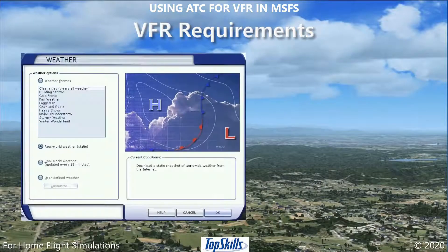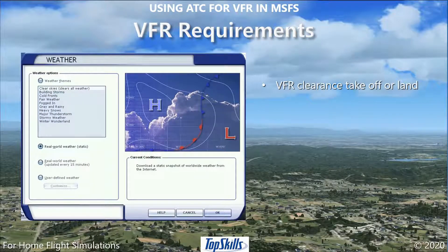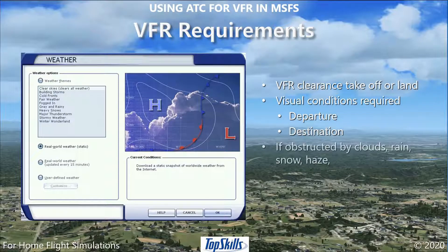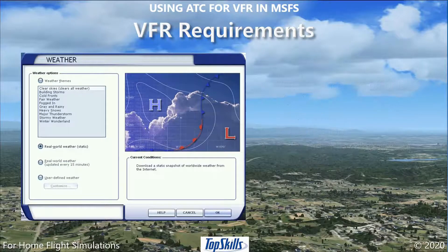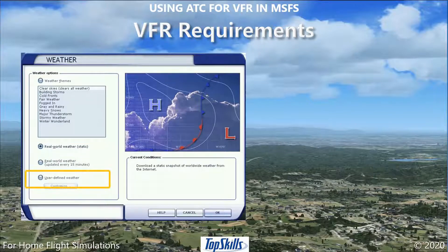For Microsoft's air traffic control to clear your VFR flight to takeoff or land, conditions at your departure and destination airports must enable visual flight. If your view is obstructed by clouds, rain, snow, or haze, you will not be cleared to fly VFR. To ensure visual flight conditions, select Clear Skies or Fair Weather from the Weather menu, or make your own user-defined VFR weather.